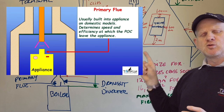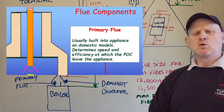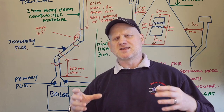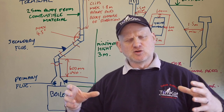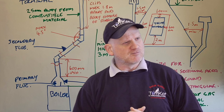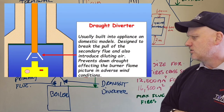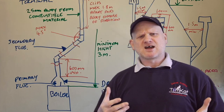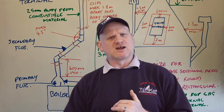The first component you're going to see is the primary flue. That's built into the appliance where the manufacturer funnels the products of combustion to get ready for going out of the appliance. The next one is the draft diverter. What does it do? It does three main things.